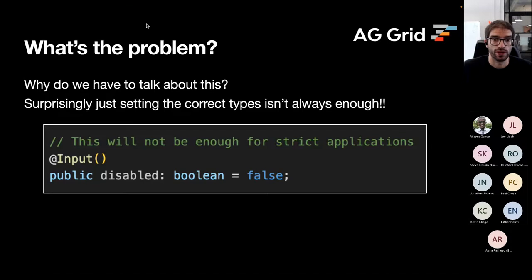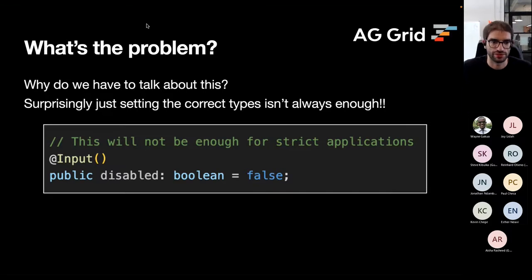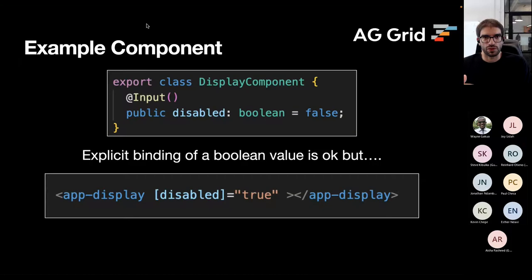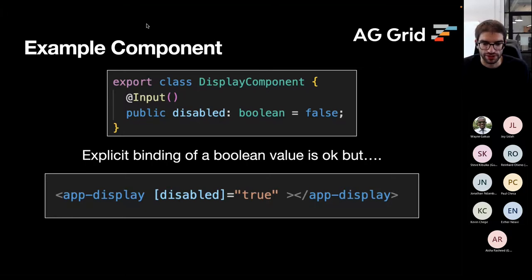This is something I ran into when working on the AG Grid component, because previously everything was typed as any. All our users didn't get any advantage of us being able to say the row data property is an array of data, or these boolean switches are actually boolean values. So I set all the types as I thought they should be — for example, disabled was just a boolean. It's fine when you use an attribute with square brackets and pass it a boolean value — that works and is type checked.